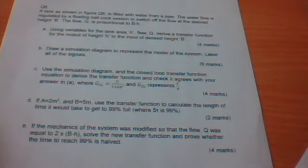Now we're going to look at question 6. A tank is filled with water from a pipe. The water flow is regulated by a floating valve system to switch off the flow at a desired height B. The flow Q is proportional to B minus H.